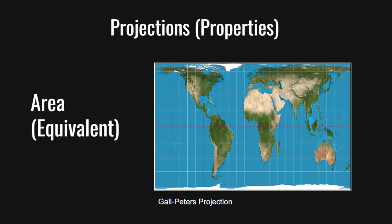The next property we can conserve is area, using an equivalent projection. In this projection, area sizes are correctly represented, and this is useful for applications where area is important. However, to conserve area, the shapes of areas are heavily distorted. In our example of an equivalent projection, the Gall-Peters projection, we can see how Greenland is now accurately represented in terms of size, but its shape is stretched out horizontally while being squished vertically in order to achieve this.